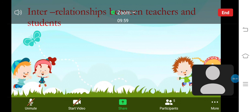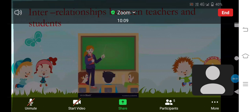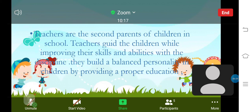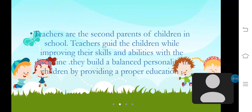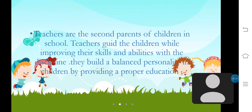Next, I am going to talk about interrelationships between teachers and students. Teachers are the second parents of children in school. Teachers guide the children by improving their skills and abilities with discipline. They build a balanced personality in children by providing proper education, teaching right and wrong and good qualities. Children's responsibility is to get a good education while respecting the teachers. Maintaining a good relationship between teachers and students helps to produce good citizens in society.